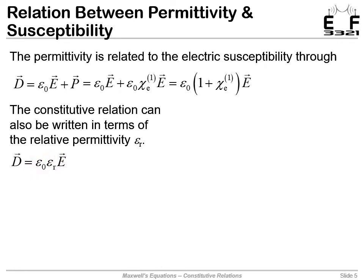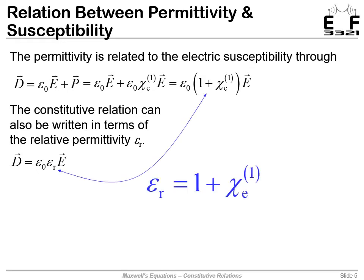These two equations must be telling us the same thing, so the relative permittivity (or dielectric constant) must equal (1 + chi_1). The permittivity is a measure of how well a medium stores electric energy, and that includes both the vacuum response and the response of the dielectric itself.